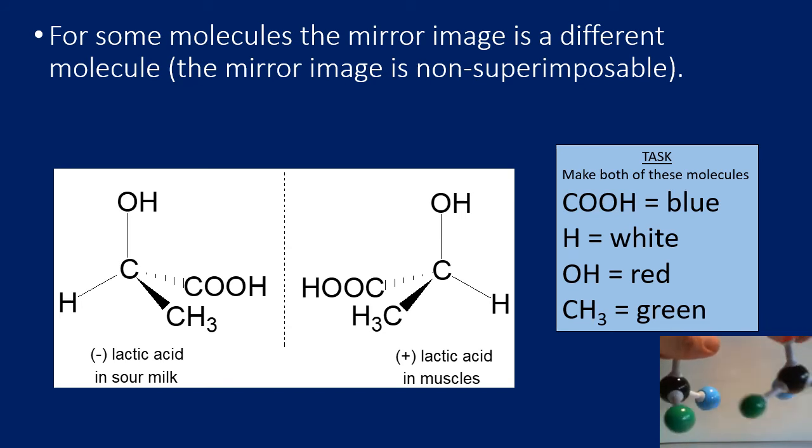The only way I can make these molecules identical is to actually physically break the bonds and put them back together in a different way. In other words, change the actual molecule. So these two molecules are definitely, definitely different. They are non-superimposable mirror images. And that's what we call stereoisomers, optical isomers.